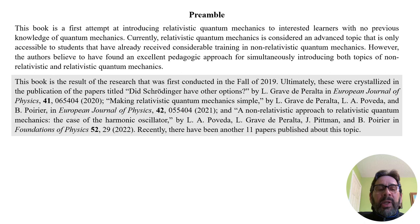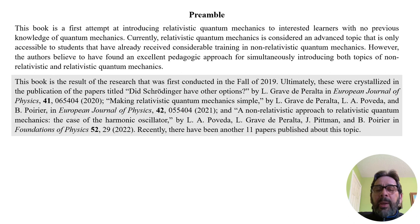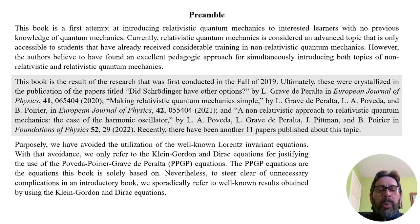This book is a result of research first conducted in the fall of 2019. This work crystallized in the publication of papers including 'Making Relativistic Quantum Mechanics Simple' by Grave de Peralta, Poveda, and Poirier in European Journal of Physics, and 'A Non-Relativistic Approach to Relativistic Quantum Mechanics: The Case of the Harmonic Oscillator' by Grave de Peralta, Poveda, Pitman, and Poirier in Foundations of Physics. Recently, there have been another 11 papers published on this topic.